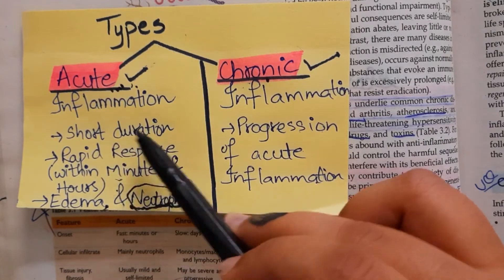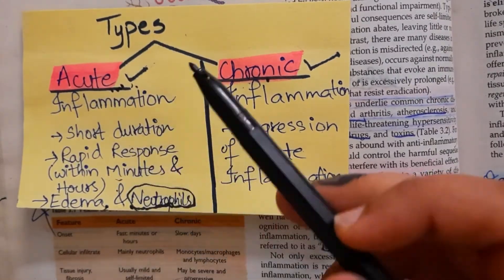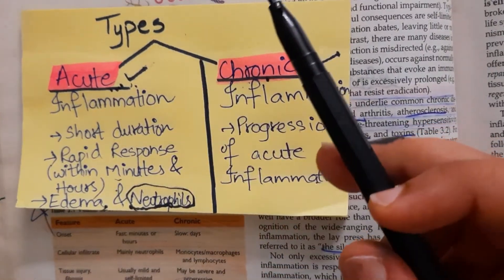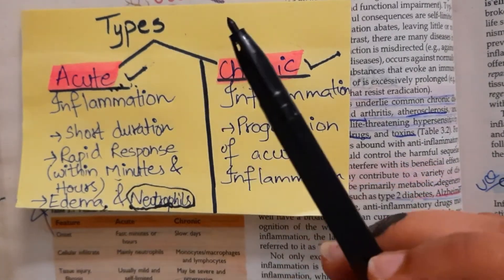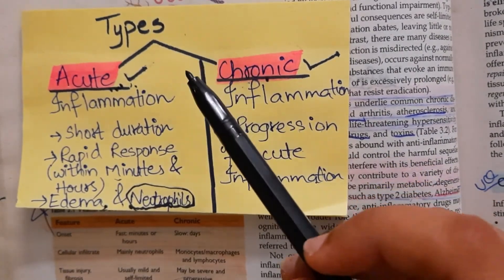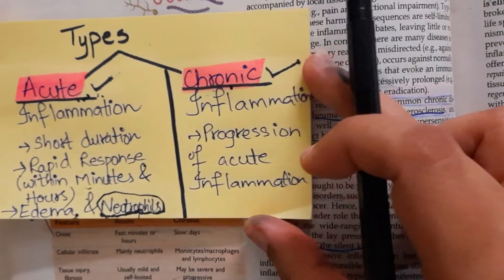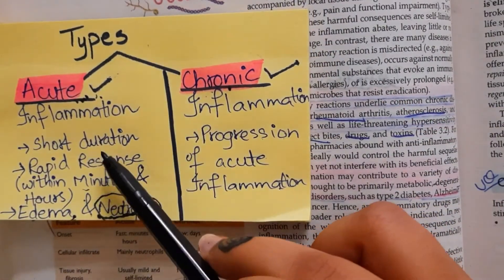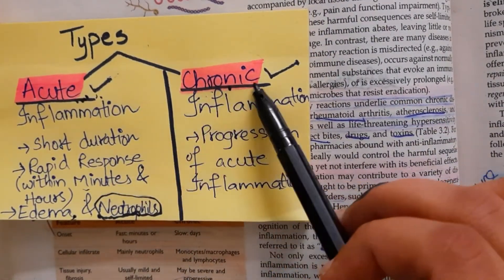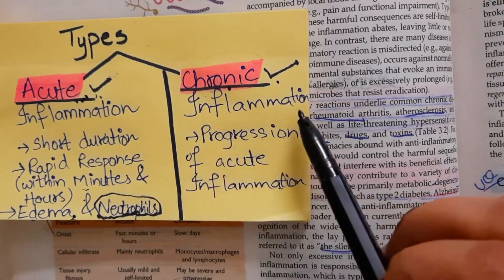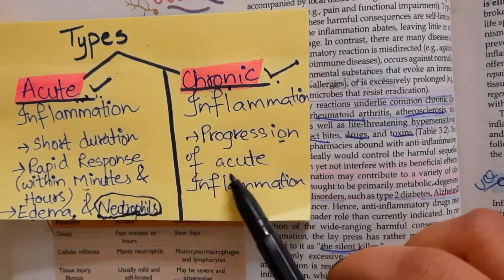Now what happens is that after acute inflammation occurs, the tissue is repaired and the microbes are killed. But if the microbes are not killed, they are very stubborn. Now what happens then is the inflammation progresses and chronic inflammation occurs. Chronic inflammation is basically the progression of acute inflammation.